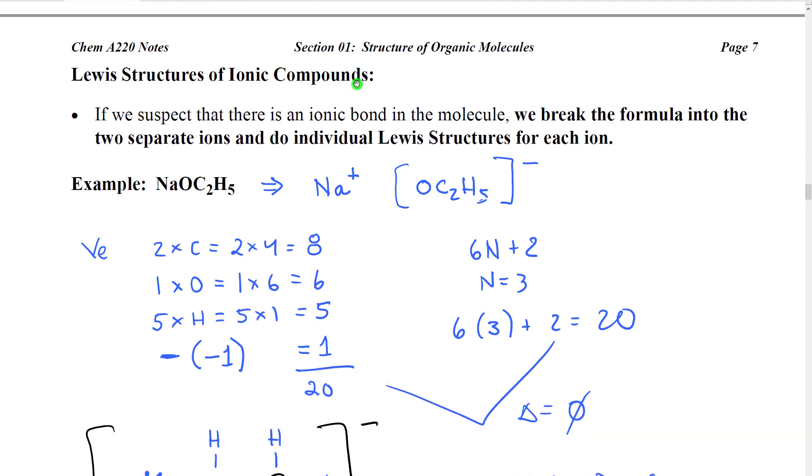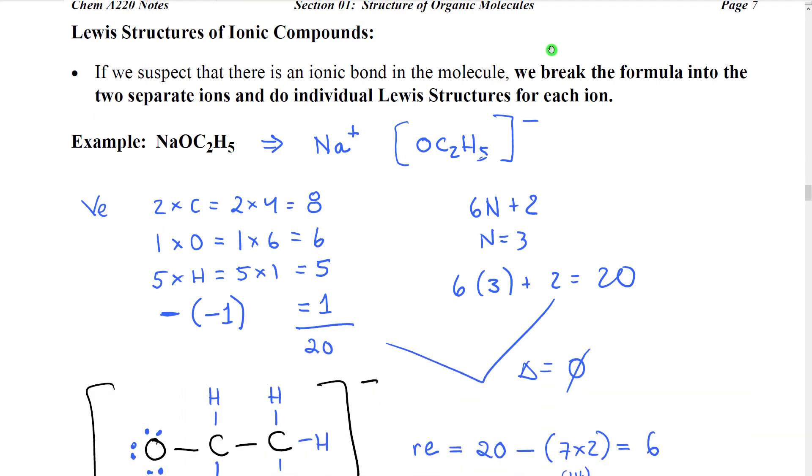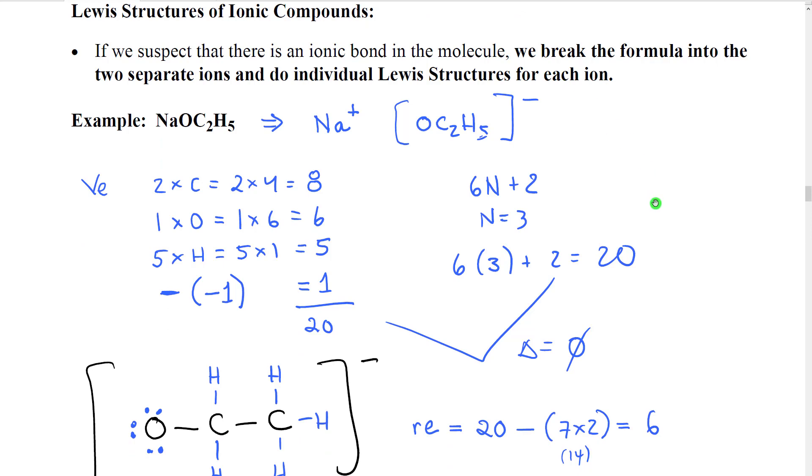Finally then, I just really quickly want to show you Lewis structure of ionic compounds. So when we suspect that there's an ionic bond in the molecule, what we do is we break the formula into two separate ions and we do individual Lewis structures for each ion. If we don't do this, then 6n plus 2 is not going to work. And in fact, we also run the risk of drawing a covalent bond between two atoms that would most likely have an ionic bond.